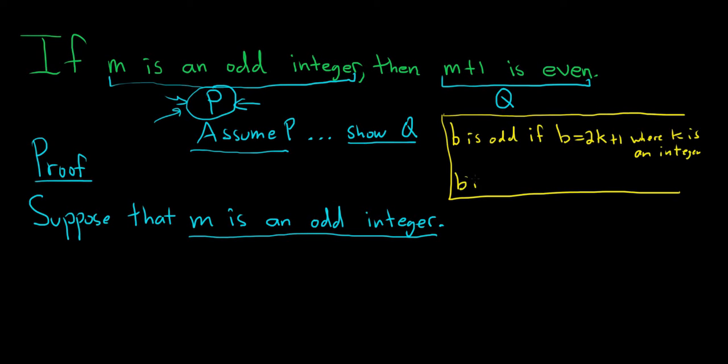We'll say b is even if b is equal to 2n where n is an integer.